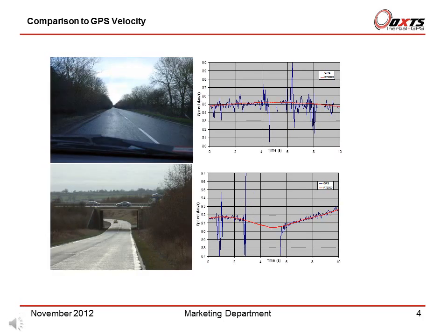In dense cover we start to see some GPS dropouts. This stretch of road is worse than the picture suggests, and we were surprised that the GPS could provide anything. In summer, when the trees are covered with leaves, there is far less coverage. Under these circumstances the GPS stops being useful as a measurement tool — no amount of filtering is going to help.